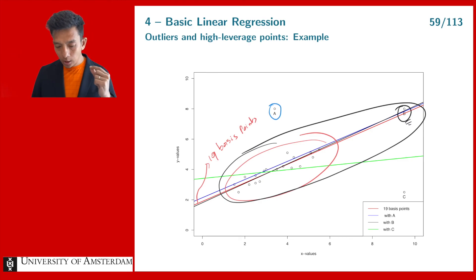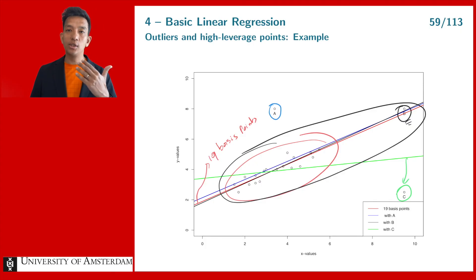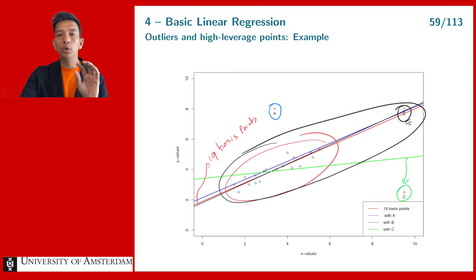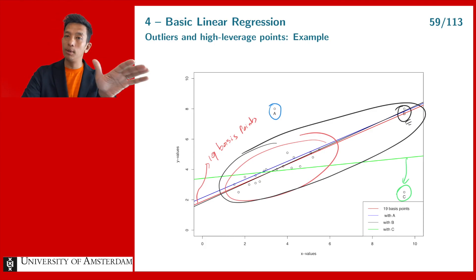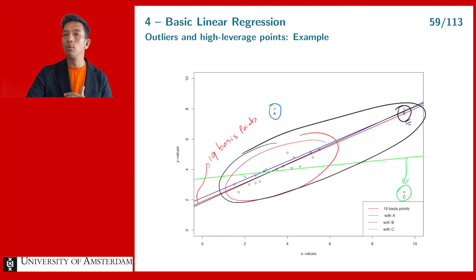For observation C it is a different story. The green line is the regression model when C is added to the base points, and you can see it completely changes the linear model. So if we ask whether we should keep A, B, or C, we should really focus on C — because keeping or removing A and B has little impact, whereas C has a major impact. Adding or removing C results in a completely different model and very different predictions, making it critical to carefully consider what to do with observation C.